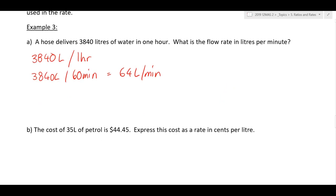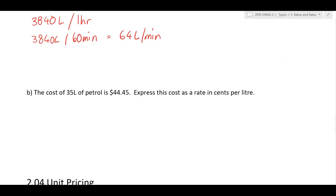Now, here we go. The cost of 35 litres of petrol is $44.45. Express this cost as a rate in cents per litre, because that's how petrol is normally advertised, in cents per litre. So, I need to know the number of cents and divide it by the number of litres.